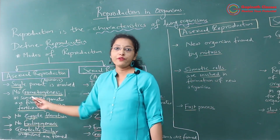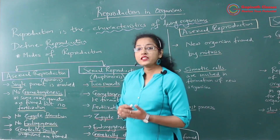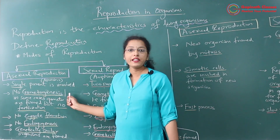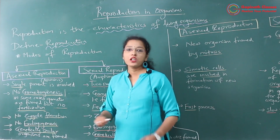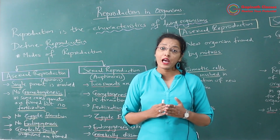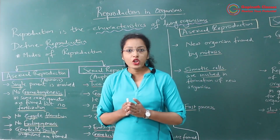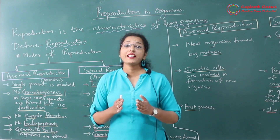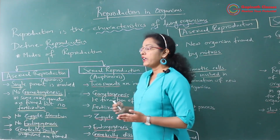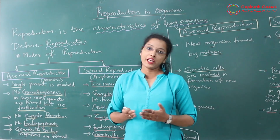Let us study the further differences between asexual reproduction and sexual reproduction. In asexual reproduction, only one single parent is involved in this particular process, so there is no formation of gamete. Gametes are not formed at all. Why are gametes not formed? Because sex organs are not developed in the parent. But in some cases, gametes are formed but there is no formation of zygote.